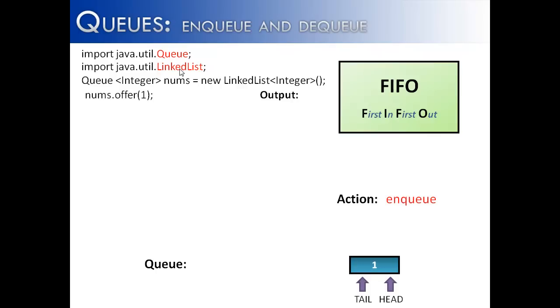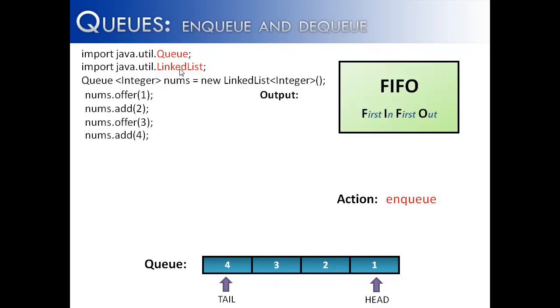The first thing that I'm going to do is add one to the queue. Notice I use the method offer, then add, offer, then add. Both of them will work just fine, and they can be used pretty much interchangeably.